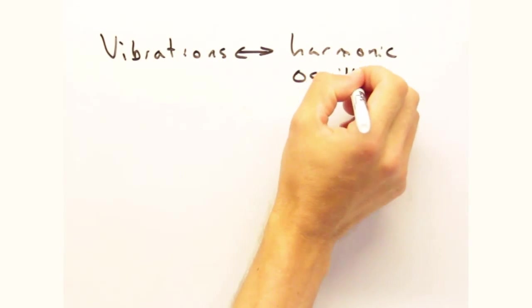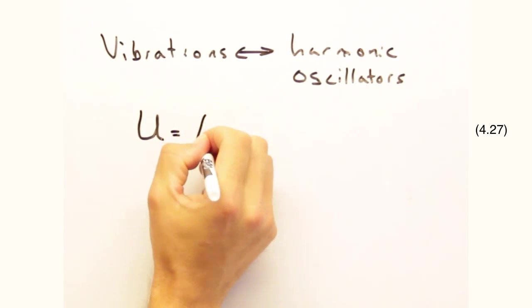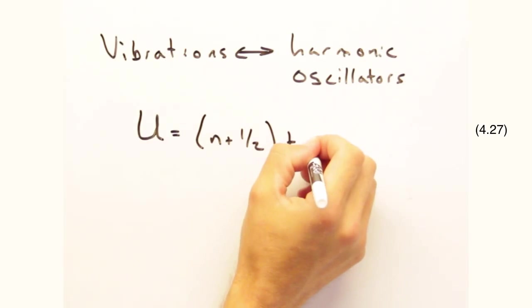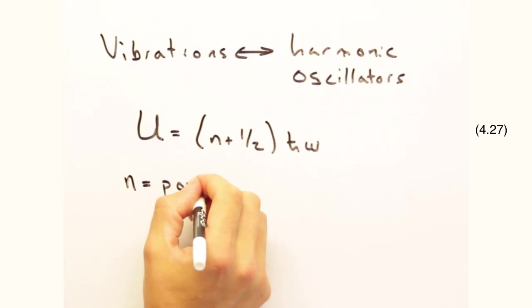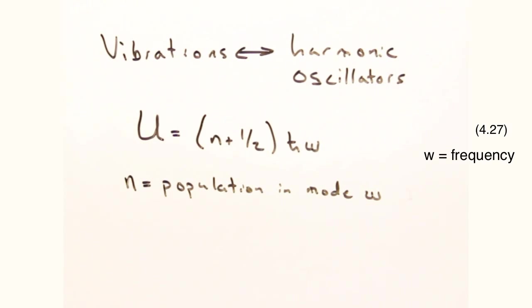In early videos, we invoked that the vibrations in a lattice behaved like harmonic oscillators. And the energy of a particular mode for a harmonic oscillator is given as u is n plus a half h-bar omega, where omega is the frequency of the oscillation, and n in this case would be the population of the phonons in a particular mode of wave vector q.